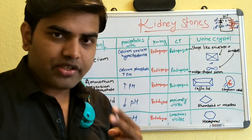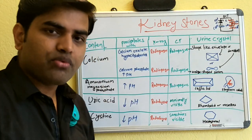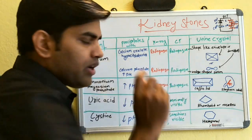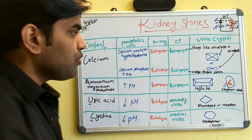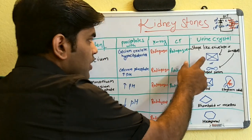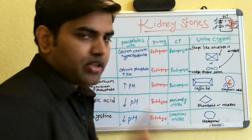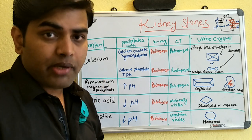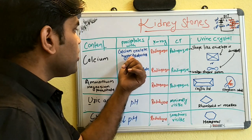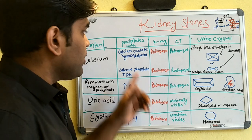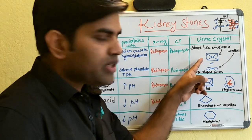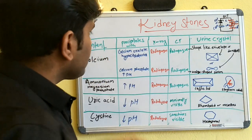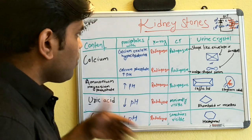If you collect the urine, concentrate it, and examine it under the microscope at 40x magnification, you will find crystals in the urine of a patient with calcium oxalate stones. These crystals look like an envelope or dumbbell shape. So if a scenario mentions crystals that are envelope-shaped or dumbbell-shaped in urine, that is a hint that you are dealing with calcium oxalate stones.